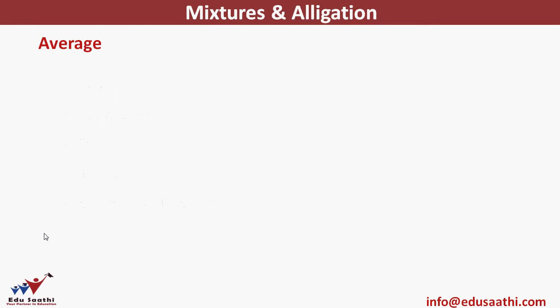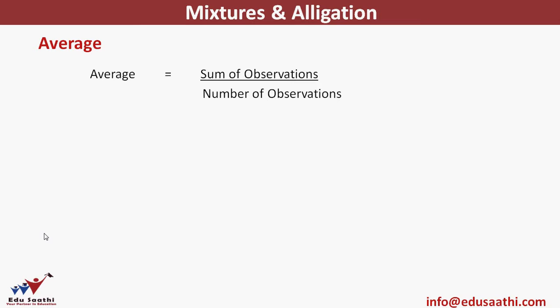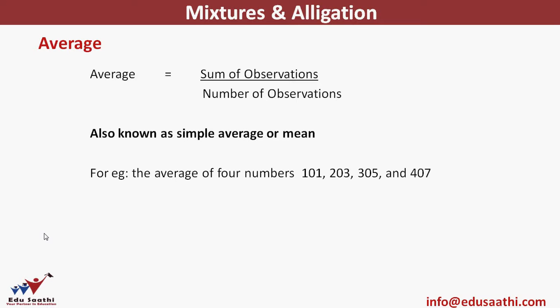Let's start with average. Average is sum of observations divided by number of observations. Whatever observations you have, sum them up and divide by the count — the number you get is the average. It is also known as simple average or the mean. If you have 4 numbers — 101, 203, 305, and 407 — simply add them and divide by 4 to get the simple average or mean.